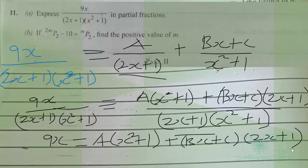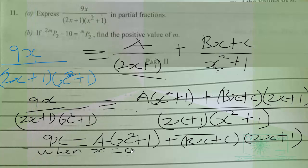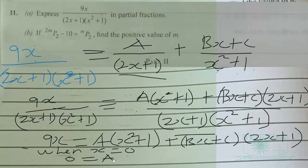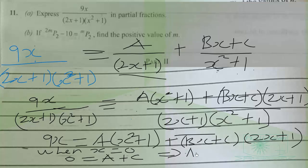When x equals 0, we get: 9 × 0 = 0, which equals A(0 + 1) + C(1). So 0 = A + C, which means A = −C. We can call this equation 1.